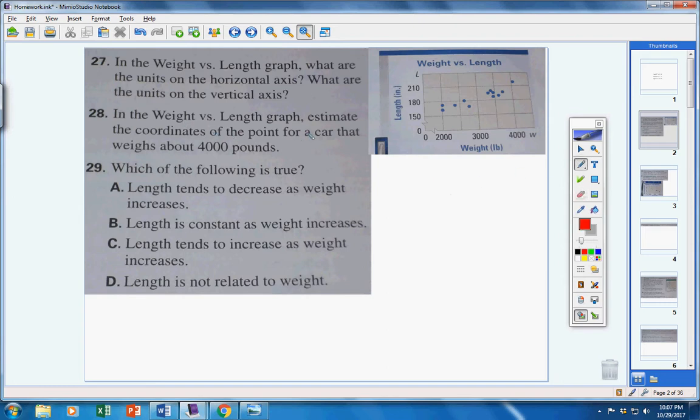What are the units on the vertical axis? It would be length in inches right here. In the weight versus length graph, estimate the coordinates of the point of a car that weighs about 4,000 pounds. A car that weighs a little over 4,000 is a little bit more than 210 inches.